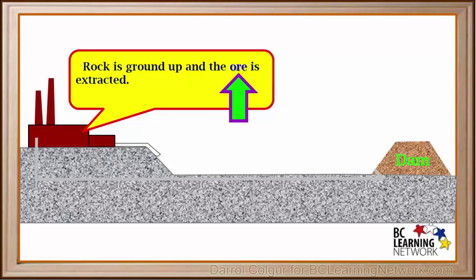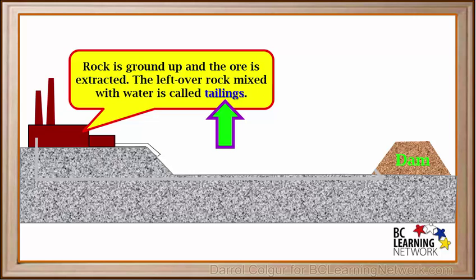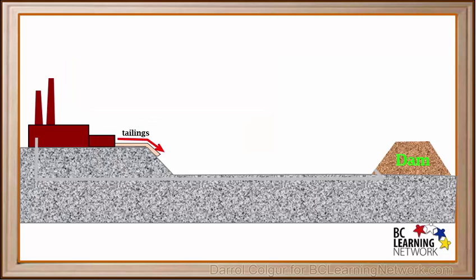Ore is a material in a rock that contains valuable minerals. In a mining processing plant, the rock that contains the ore is ground up and the ore is extracted. The leftover rock, along with the water needed in the processing, is called tailings. Mines produce large quantities of tailings, and they must be stored. The tailings are pumped into a pipe and into a lake-sized pit called a tailings pond.